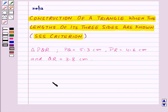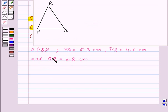First of all, let us draw a rough sketch of triangle PQR and write all the measurements on that figure. So here is the rough sketch of triangle PQR. We are given PQ equals 5.3 cm, PR equals 4.6 cm, and QR equals 3.8 cm.